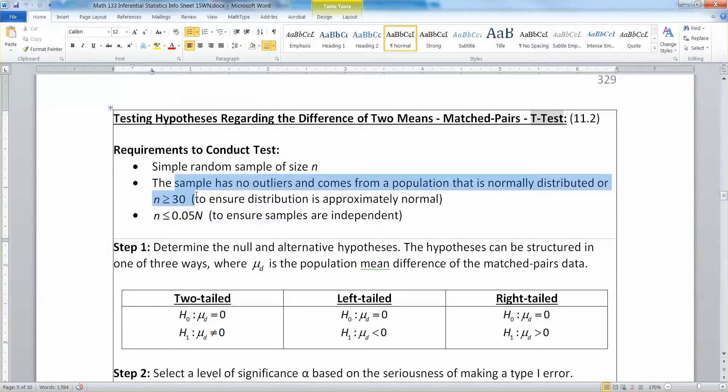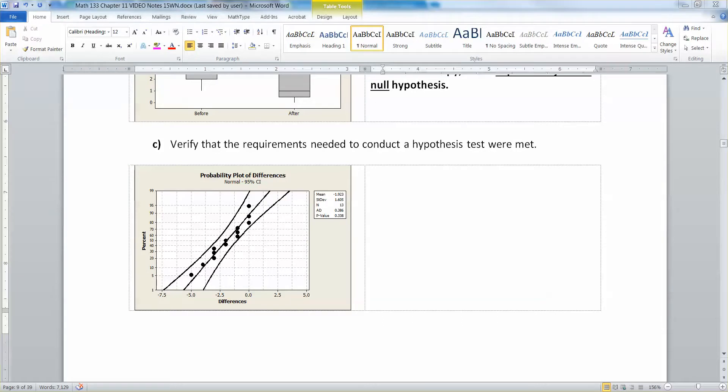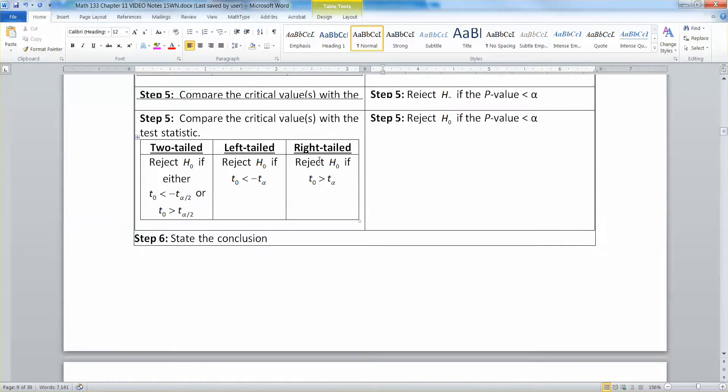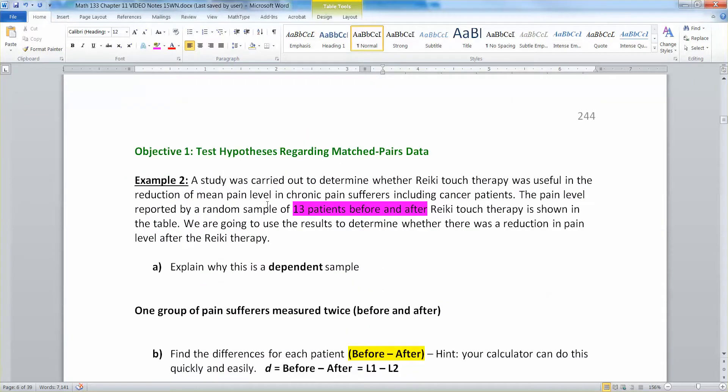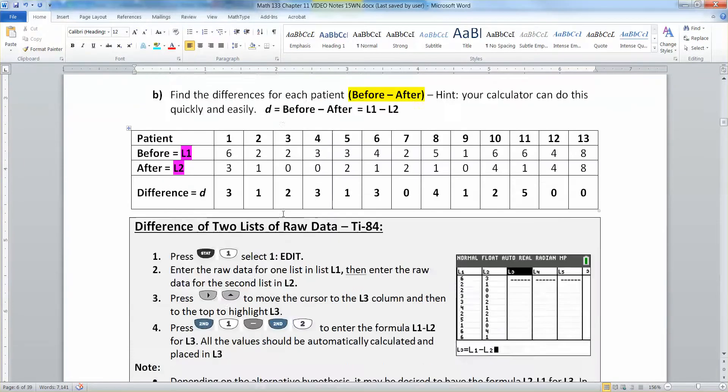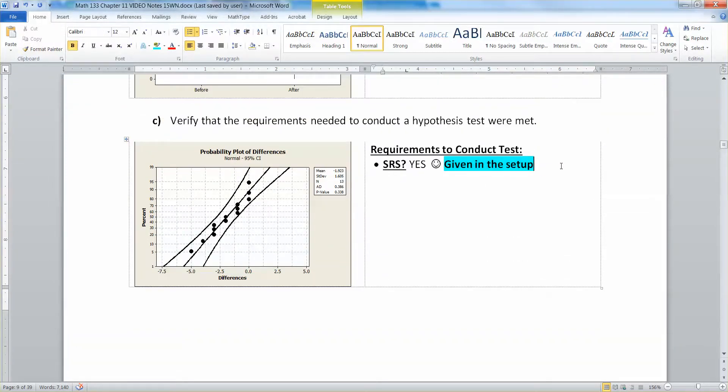Simple random sample, data is either normal or we have n greater than 30, and little n is less than 0.05 capital N. The first thing we need to know is do we have an SRS? The answer is totally - we completely have an SRS. When it said random sample earlier, that gives us that we have a random sample, so we have an SRS. I changed to SRS because I'm a stats person - we tend to be very lazy about our notation. I put a smiley face to remind myself we've got it. We need three smiley faces to move on.